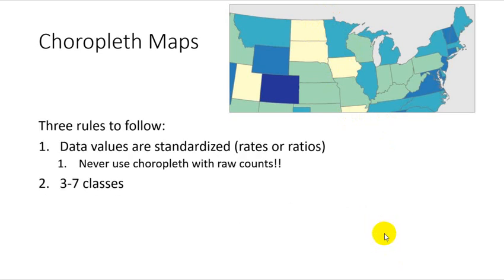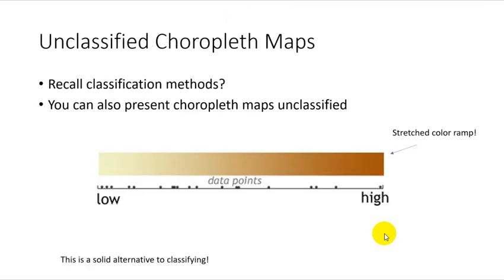The rules to follow — really just two. Number one: use rates or ratios. You can't map raw counts like population with a choropleth map; that is actually incorrect. It's like starting a bar chart with some value other than zero. And then a rule of thumb is three to seven classes — keep it simple, but not too simple.